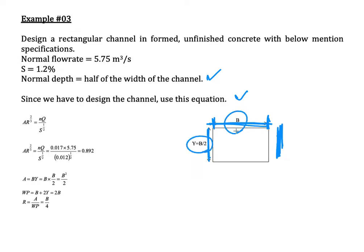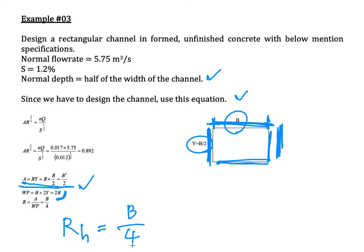The cross-sectional area A equals b times (b/2), giving b squared over 2. The wetted perimeter equals (b/2) plus b plus (b/2), which equals 2b. Therefore, the hydraulic radius Rh equals (b²/2) divided by 2b, which simplifies to b over 4.